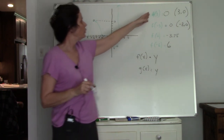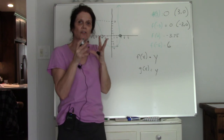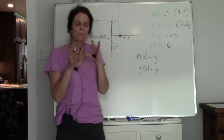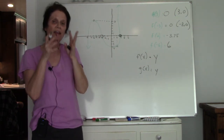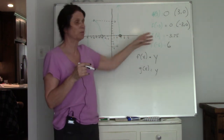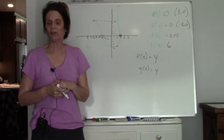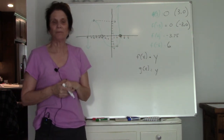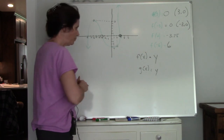So when you have a value inside those parentheses, that's identifying the x value. The value inside the parentheses is your x value, and you find what your graph is doing at that x value to get y.